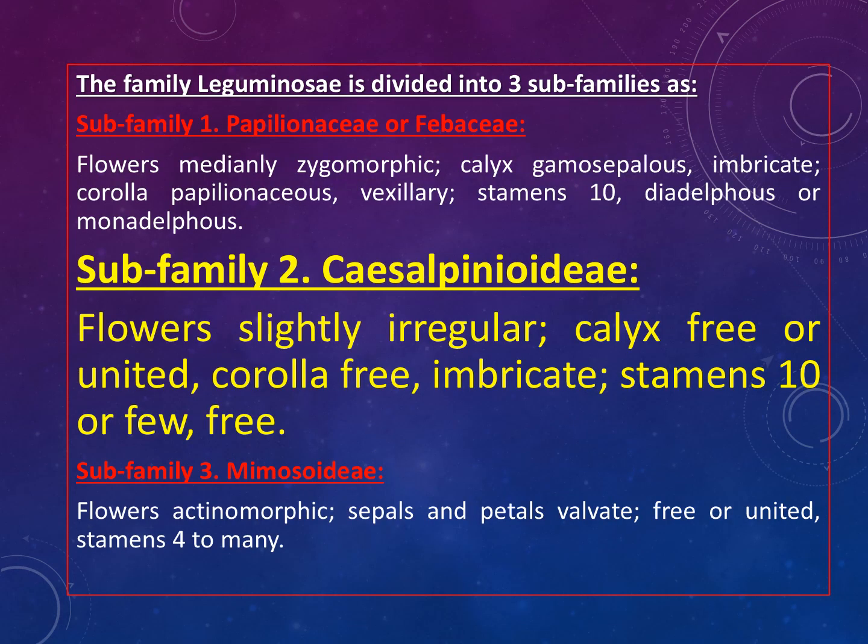The family Leguminaceae is divided into three sub-families: sub-family Papilionaceae, sub-family Caesalpinaceae, and sub-family Mimosoideae. We have discussed family Papilionaceae in our last lecture, and today we will discuss about sub-family Caesalpinaceae.